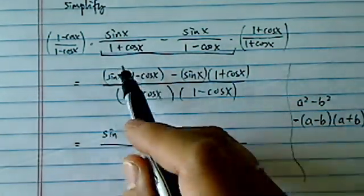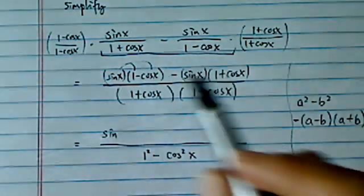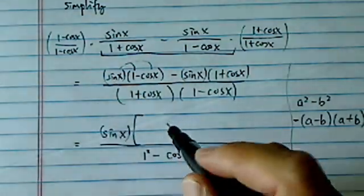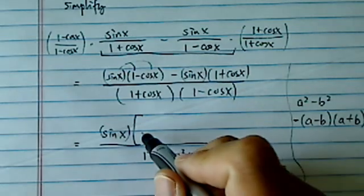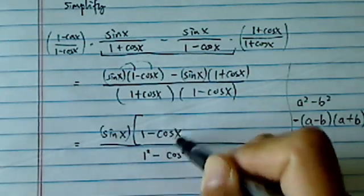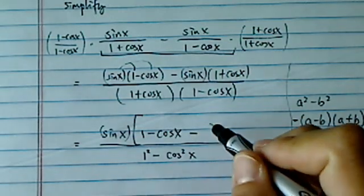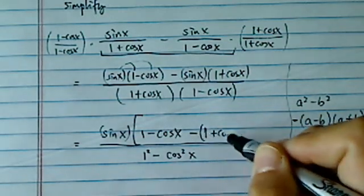Now, there's a couple ways you can clean it up. You can multiply them out, or in my case, I'm going to pull the sine x out, because it's common for both of them. Then I have 1 minus cosine x for the first term, minus 1 plus cosine x.